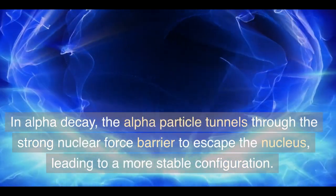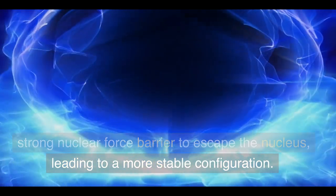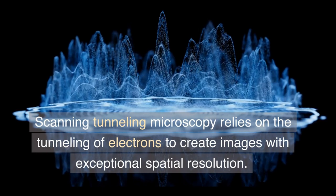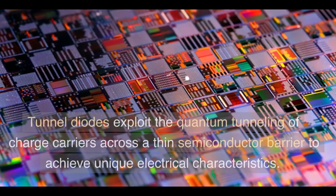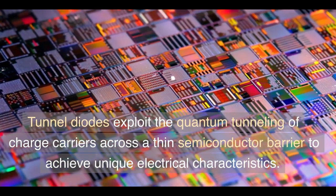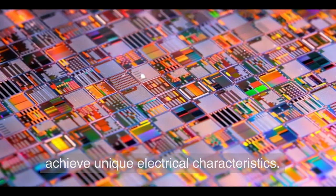In alpha decay, the alpha particle tunnels through the strong nuclear force barrier to escape the nucleus, leading to a more stable configuration. Scanning tunneling microscopy relies on the tunneling of electrons to create images with exceptional spatial resolution. Tunnel diodes exploit the quantum tunneling of charge carriers across a thin semiconductor barrier to achieve unique electrical characteristics.